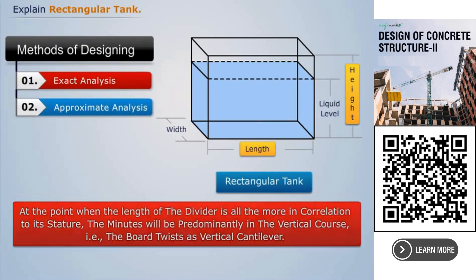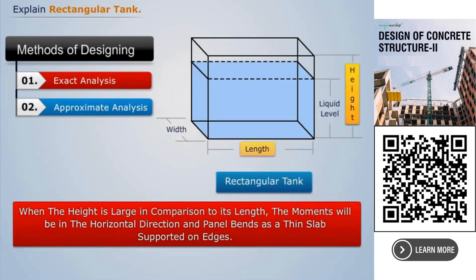That is, the board twists as vertical cantilever. When the height is large in comparison to its length, the moments will be in the horizontal direction and panel bends as a thin slab supported on edges.